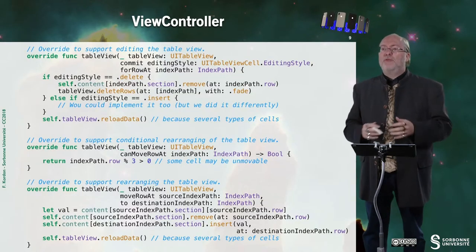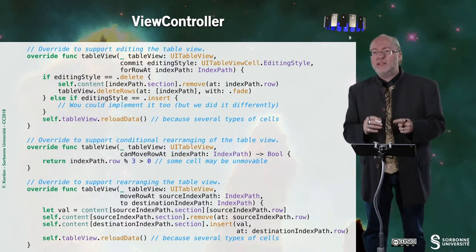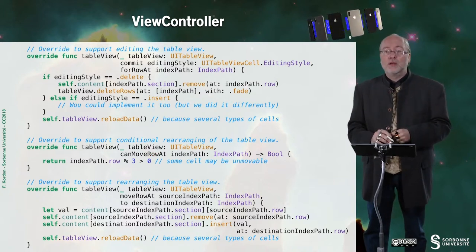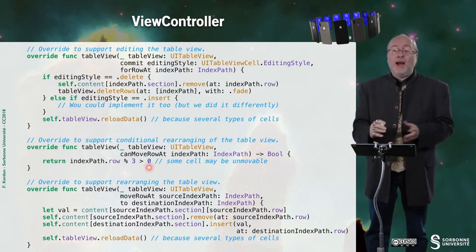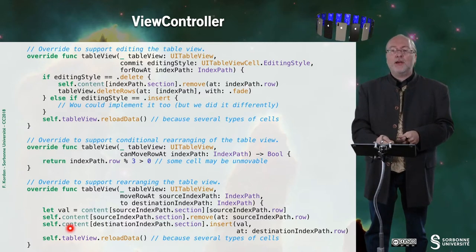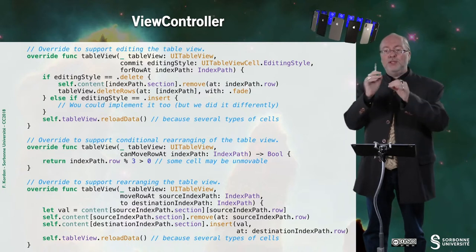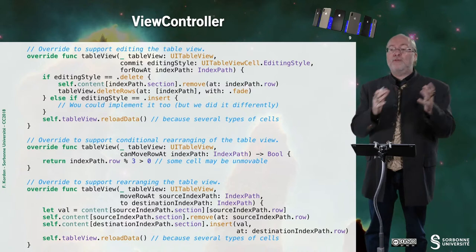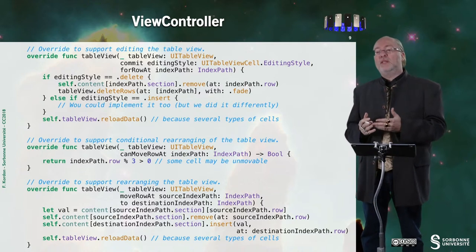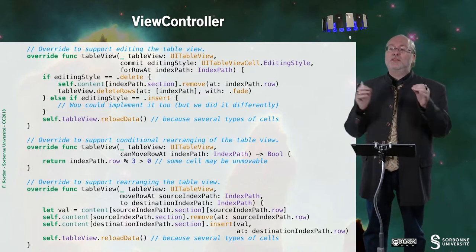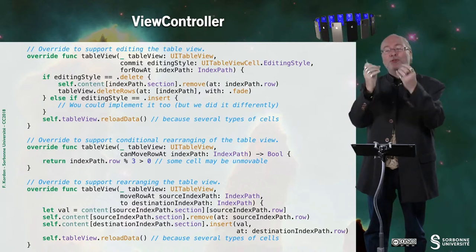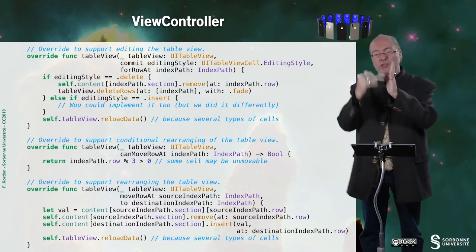This is the same for rearranging. You observed there were some cells I could not rearrange — this is because in some situations I return false. This is where I decide whether a cell can be rearranged or not. For the actual rearrangement, I just update the data structure to keep it consistent with what is displayed, and then possibly call reload data — once again necessary because the cell type depends on position in the section, not on content.